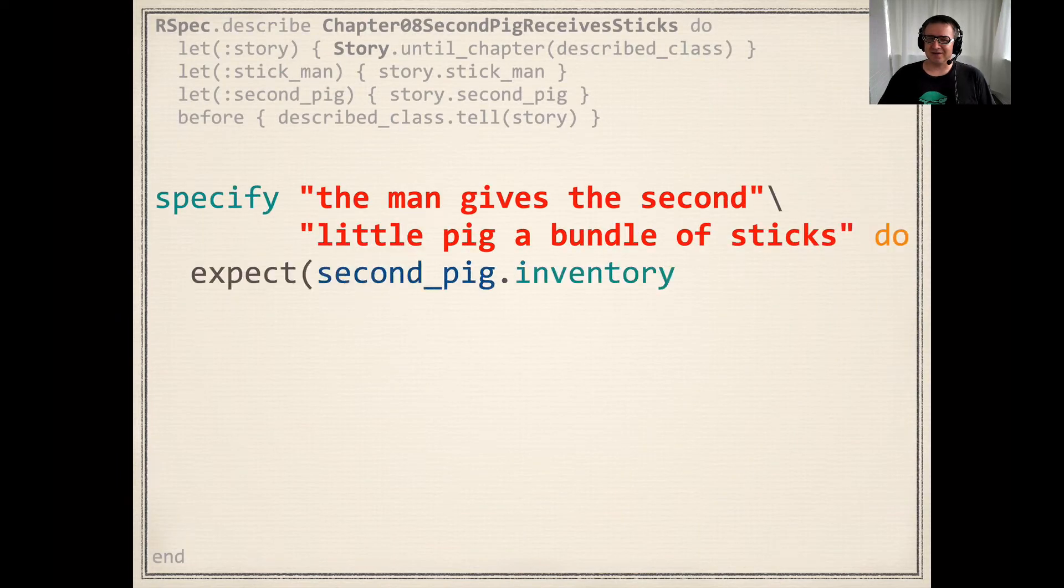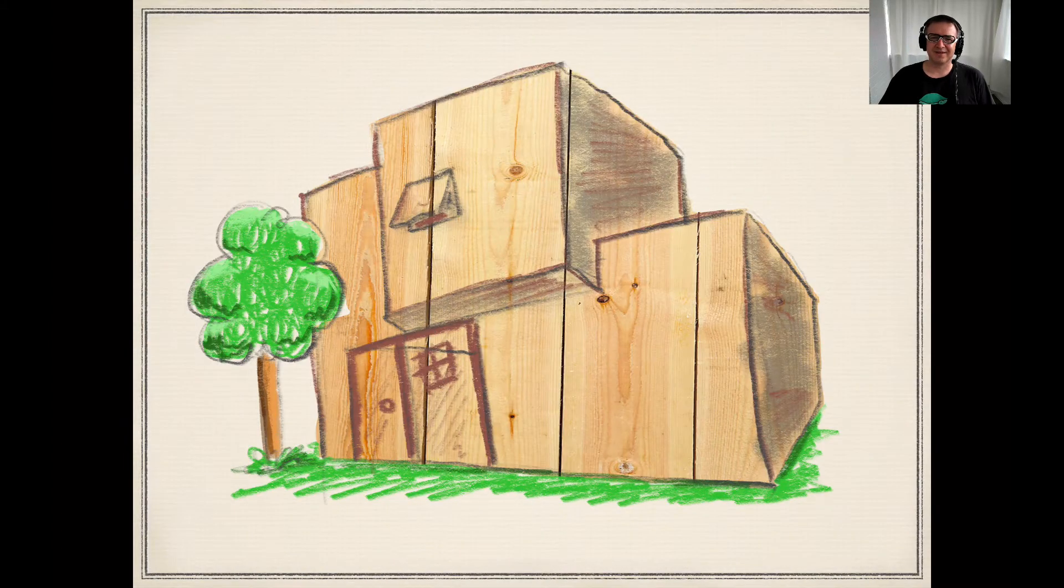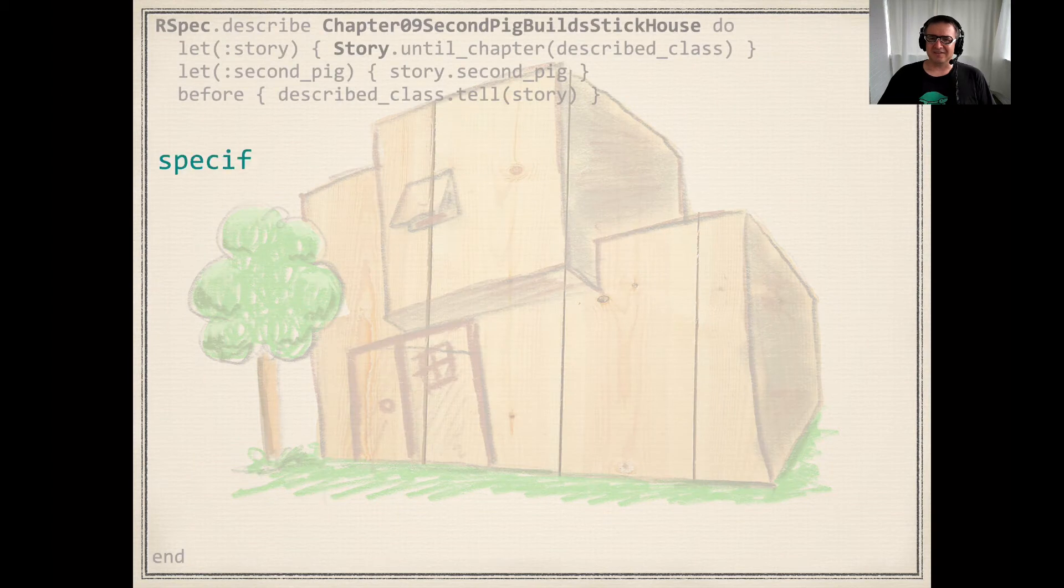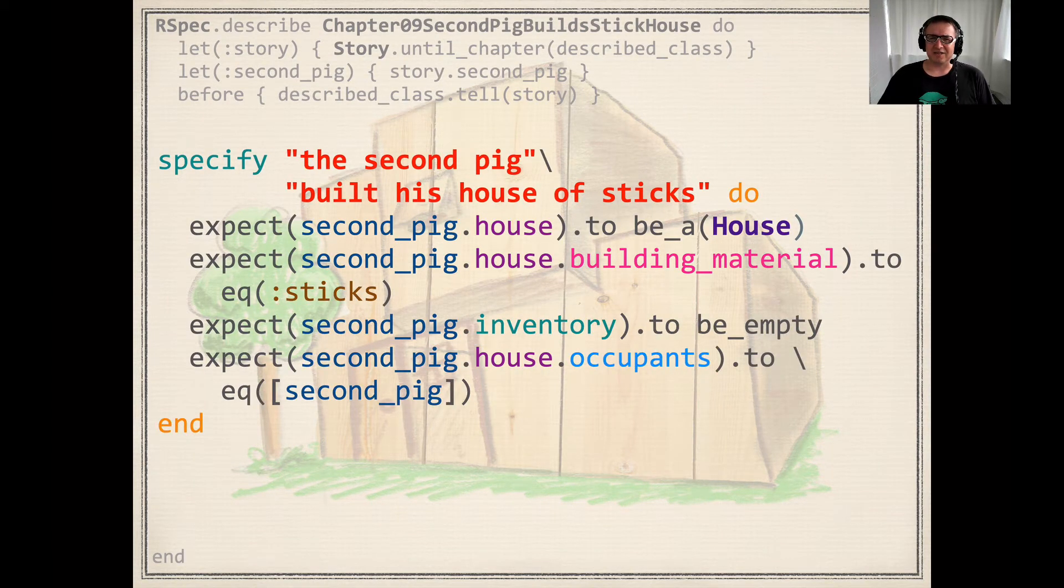He said to the man, Please, sir, give me those sticks, so that I may build myself a house. The man gave the second little pig his sticks, and continued on his way. And the second little pig used all the sticks the man had given to him to build himself a house. I'll be safe and snug inside, he said.